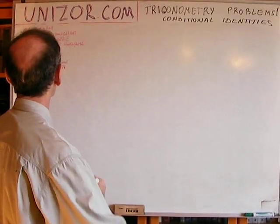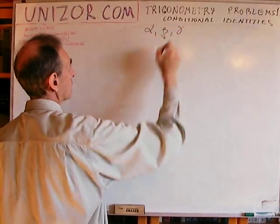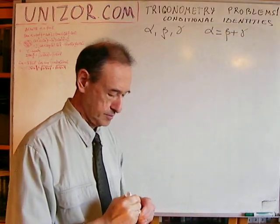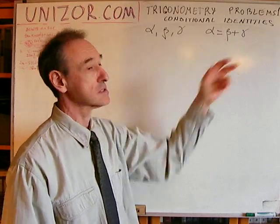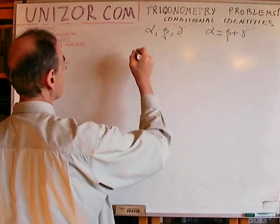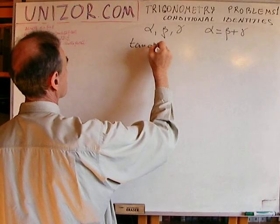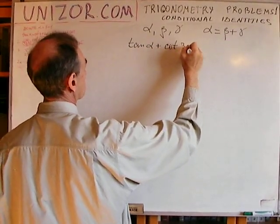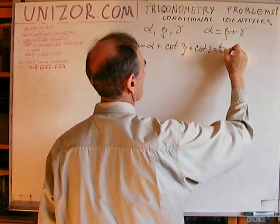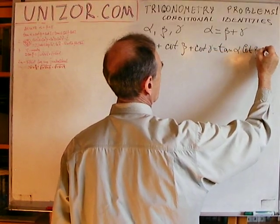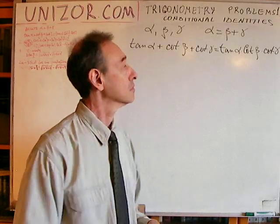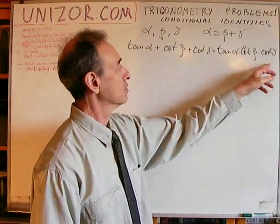Number one. There are three acute angles, alpha, beta, and gamma, related to this equality. The angle alpha is equal to the sum of beta and gamma, and they are all acute angles. What we have to prove is that tangent alpha plus cotangent beta plus cotangent gamma equals to their product — that is, the sum of these three numbers equals their product.